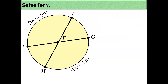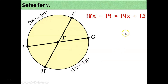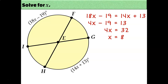For the next problem with two variable expressions: these are vertical angles, and central angles equal the arcs they intercept, so these two arcs must be equal. Setting 18X minus 19 equal to 14X plus 13 and solving, we find X equals 8.